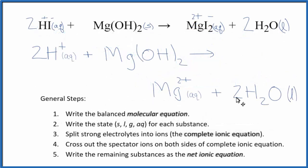This is the balanced net ionic equation for hydroiodic acid plus magnesium hydroxide. You can see that we have two positive charges here on this side, two positive charges here, so charge is conserved. Mass is conserved as well. We have four hydrogen atoms here, four here, two oxygens, two oxygen atoms, and one magnesium on each side.